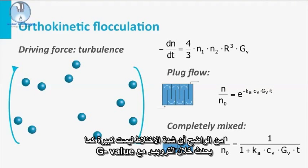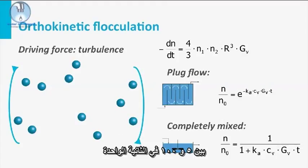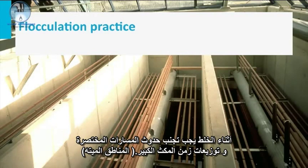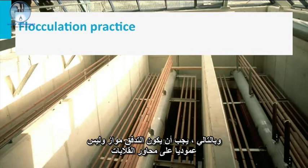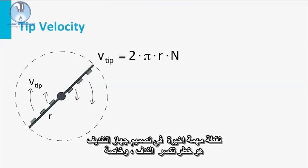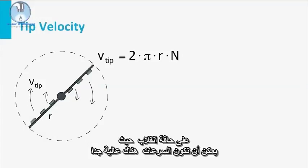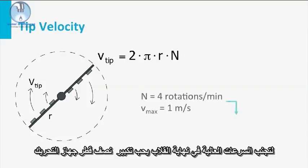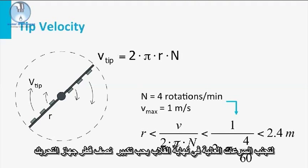Obviously, the mixing intensity is not as high as during coagulation, with G-values between 5 and 100 per second. In practice, mostly mechanical mixing is applied to be able to react to flow variations. During mixing, it is necessary to avoid short-circuiting and large residence time distributions. Therefore, the flow must be parallel and not perpendicular to the stirring axis. An important point for the design of a flocculation device is the risk of floc break-up, especially at the tips of the stirring devices where velocities can locally be very high. To avoid these high tip velocities, the radius of the stirring device should be maximized.